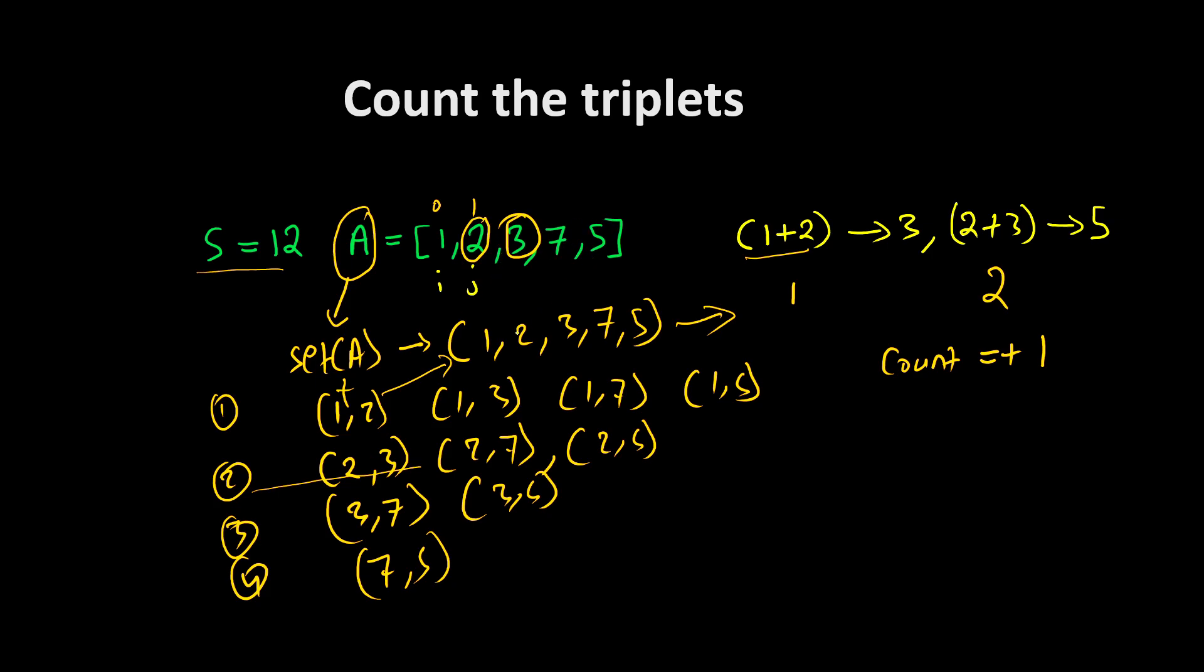Again, 2 plus 3 in the second iteration. You can see 2 plus 3 we have 5 inside the set here, so this is one more update. Now this time, count will be equal to 2.